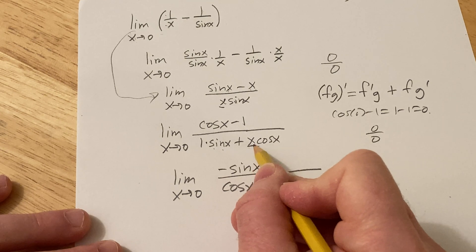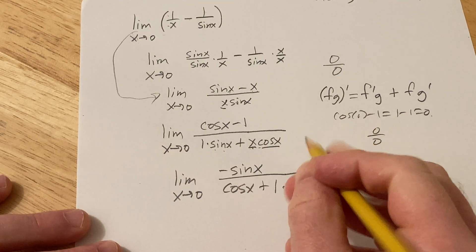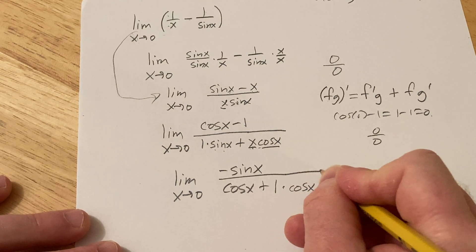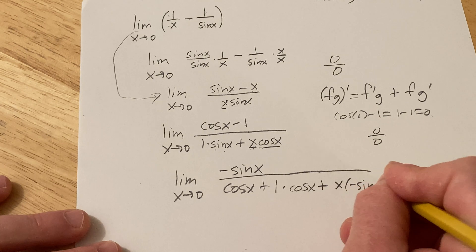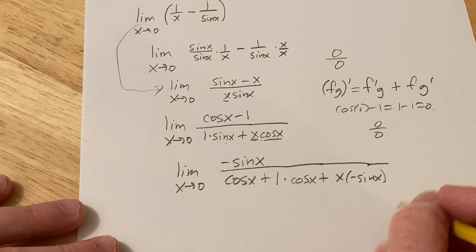Derivative of x, this is the first, second. Derivative of the first is 1 times the second plus the first times the derivative of the second, which is negative sine x. Good stuff.